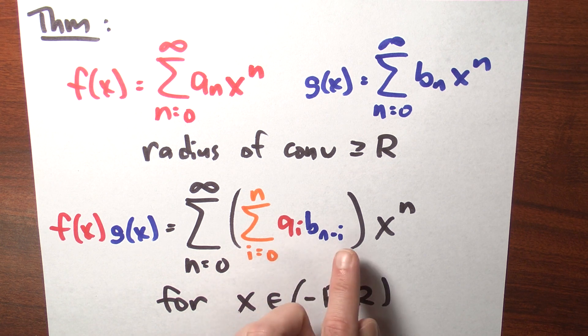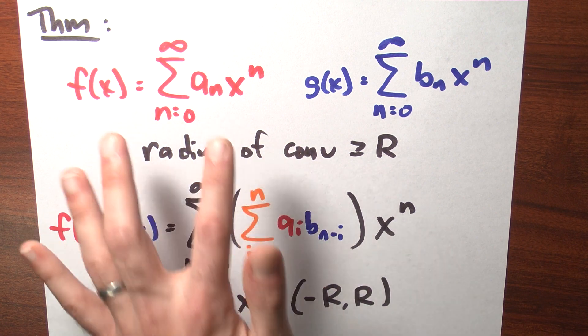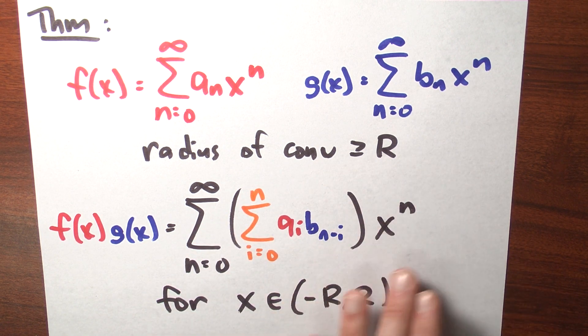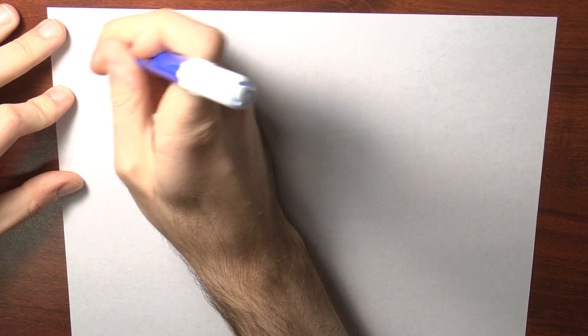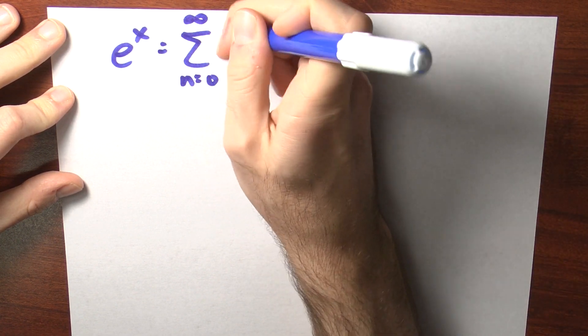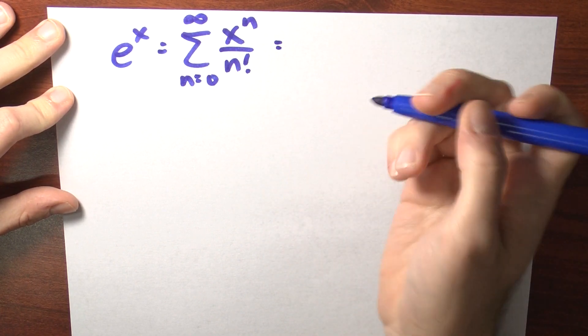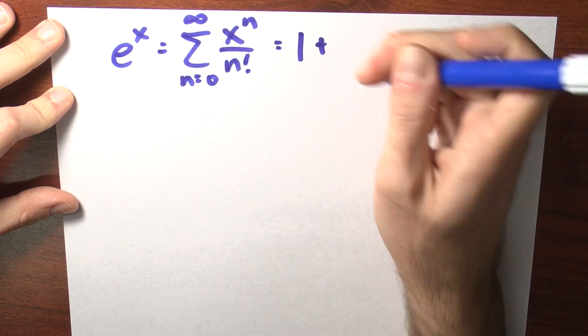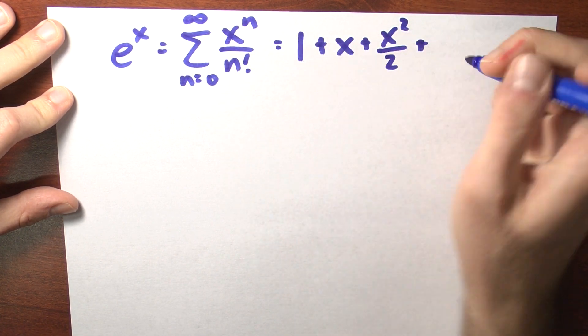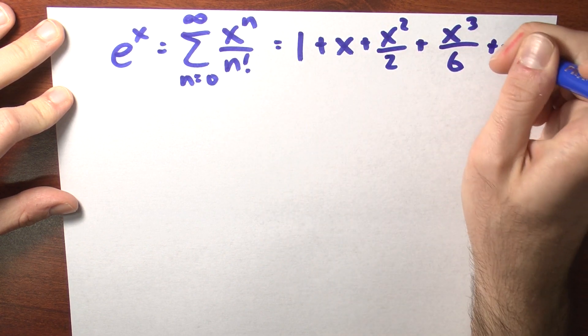These coefficients have indices that add up to n, which is exactly what we'd expect when multiplying terms from each power series to get x to the n. We're not going to prove this result, but I hope it's plausible. Here's a cool example: e to the x has the power series representation, the sum n goes from 0 to infinity of x to the n over n factorial. Writing out the first few terms: 1 plus x plus x squared over 2 plus x cubed over 6, and so on.